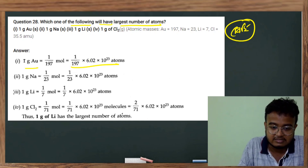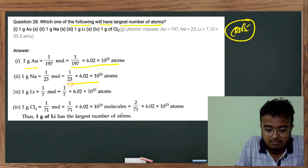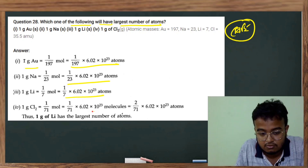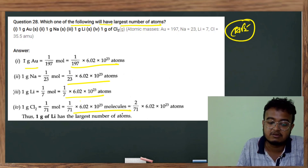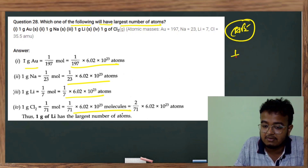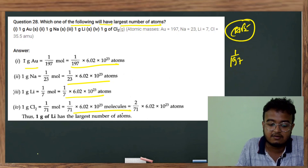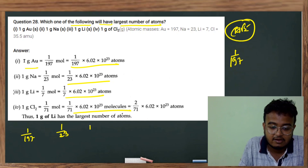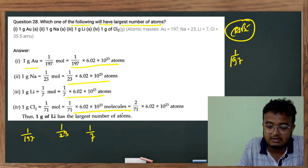Just use the formula to write it out. For sodium, lithium, chlorine, and all the elements: our values are 1/197, 1/23, 1/7, and 2/71 respectively.